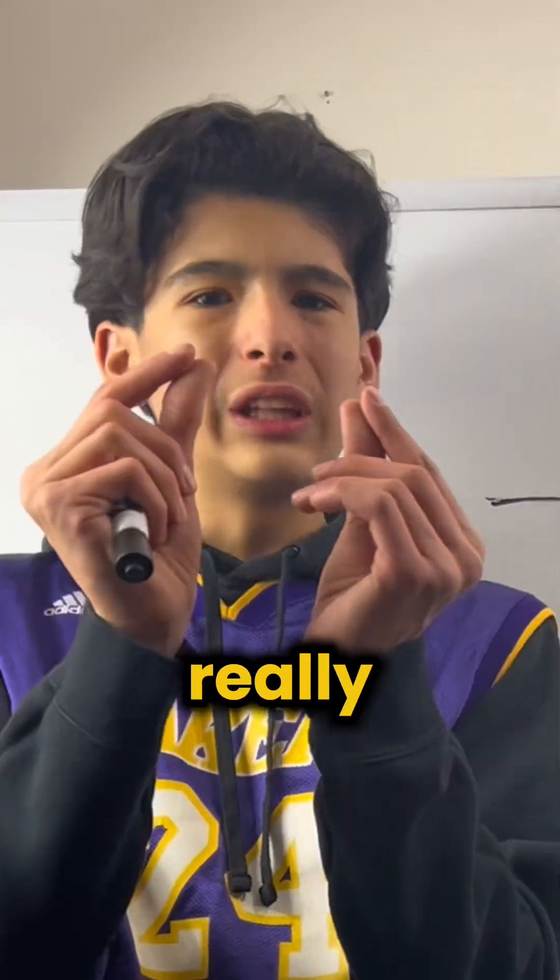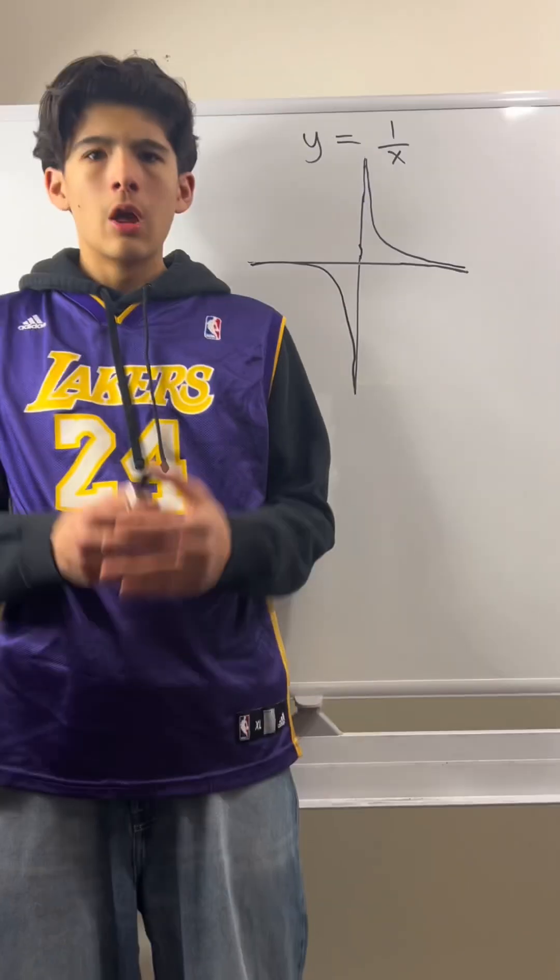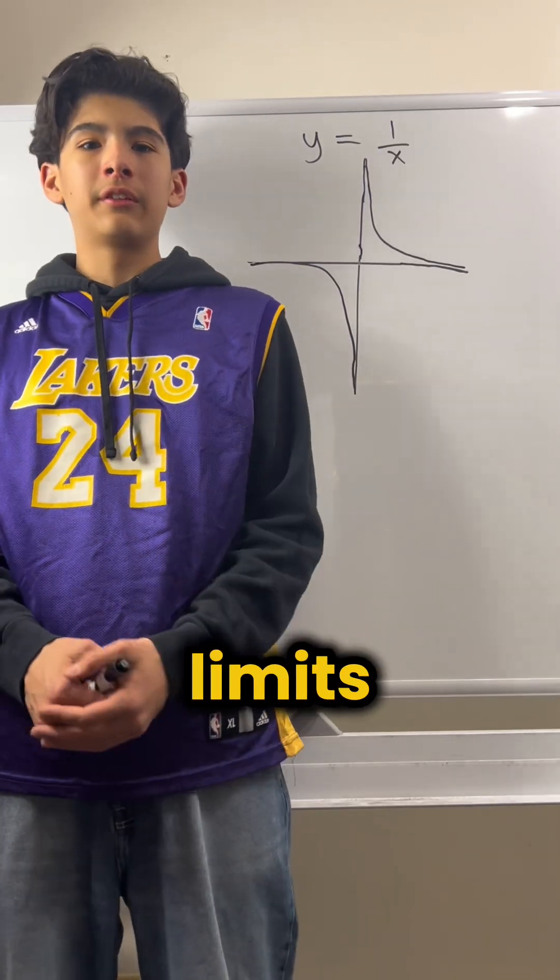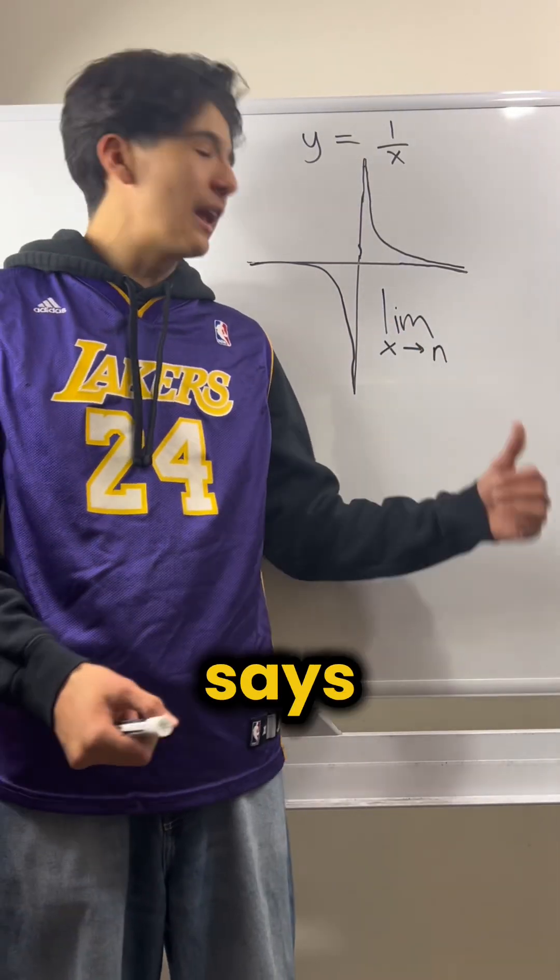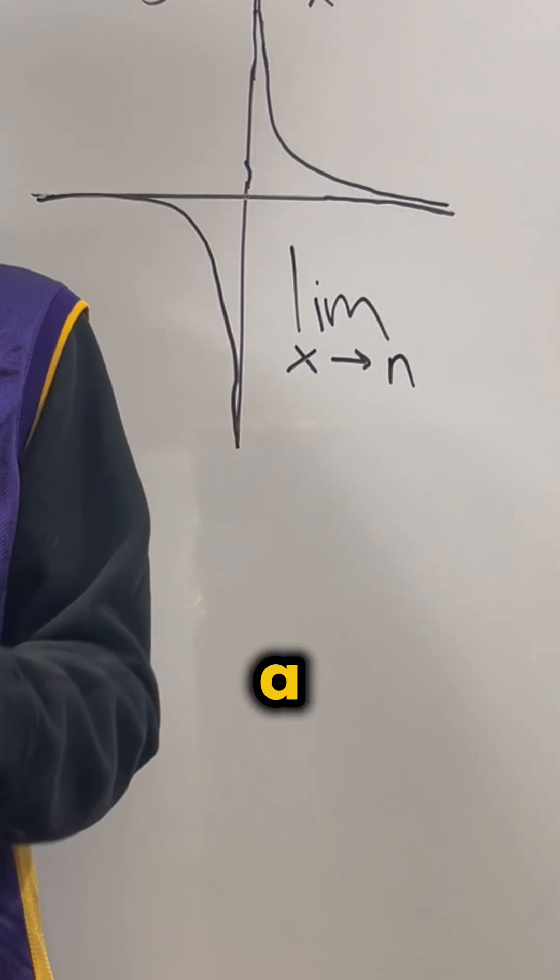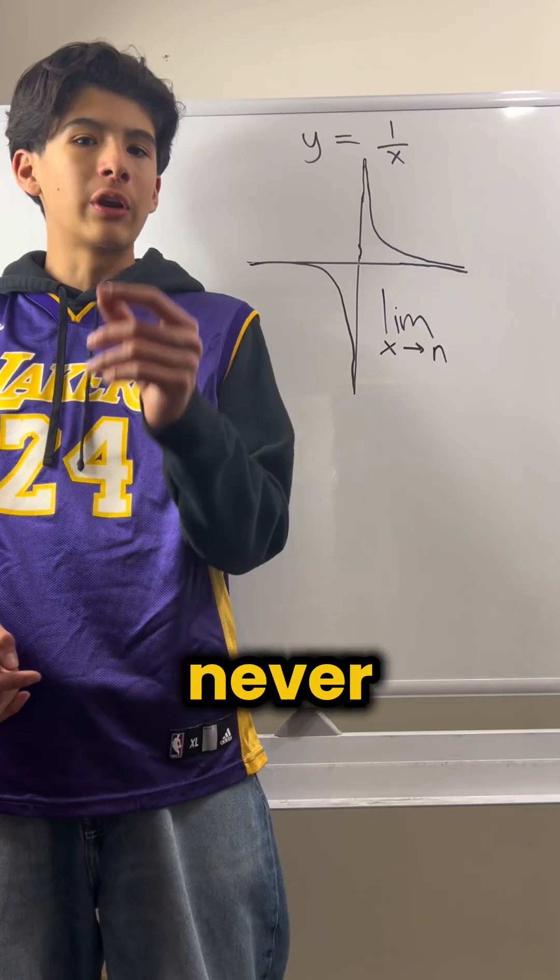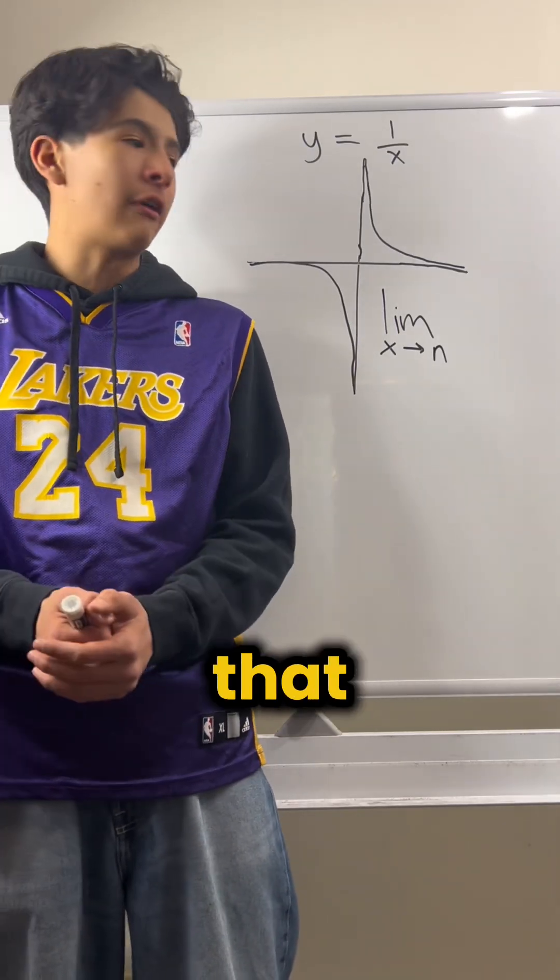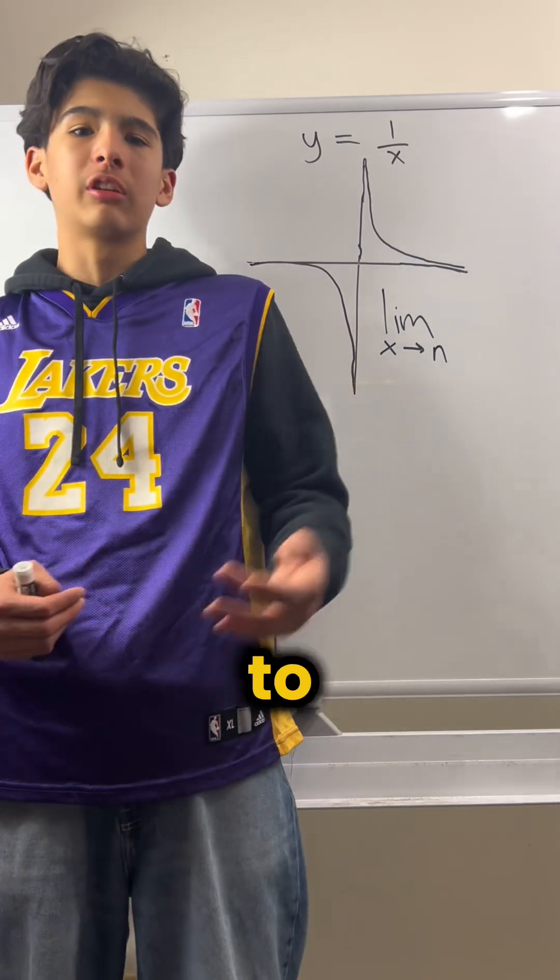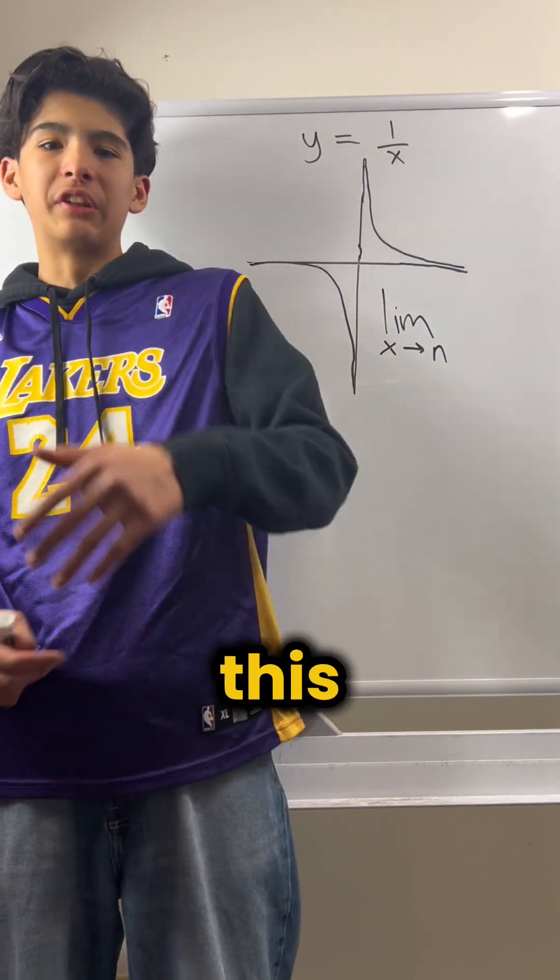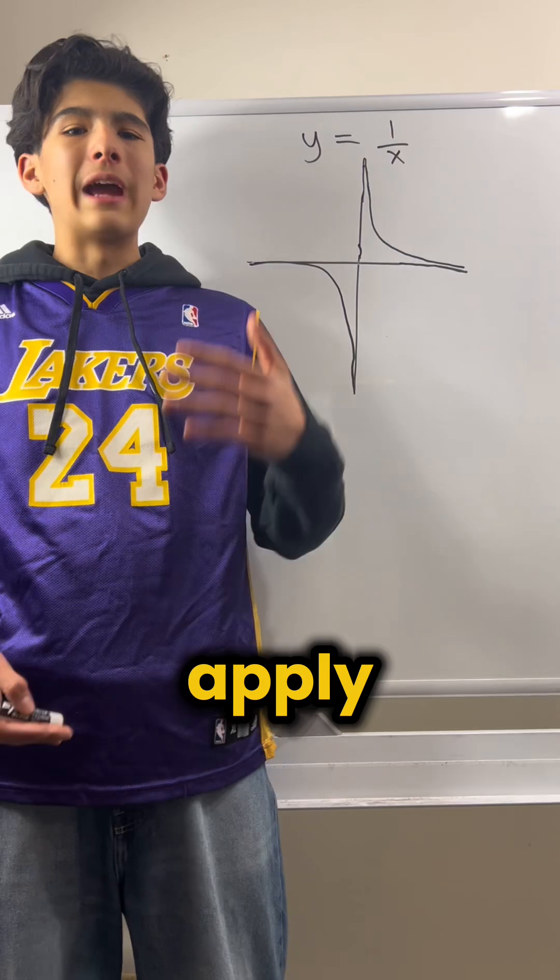But is there a way we could get really, really, really close to that? Well, we can with limits. What limits do is it says as x approaches a certain value, remember, it never ever reaches that value, but it gets really close to that value. So as it gets really close to that value, it equals to this number. So let's apply it here.